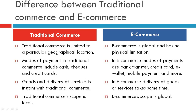The last point: traditional commerce scope is local, while e-commerce scope is global. In traditional commerce, only people locally residing in the neighborhood go to the market and buy goods. In e-commerce, globally anybody from anywhere can reach any market or shop and buy things. This question can be asked for two marks. For a two-mark question, four points are more than enough. All the points we have seen can be asked for fill in the blanks or MCQs, so you must know all of them.